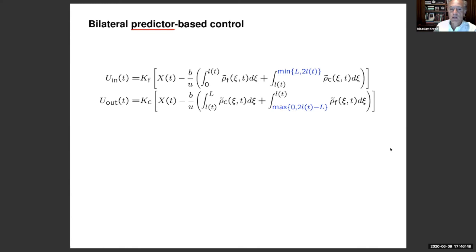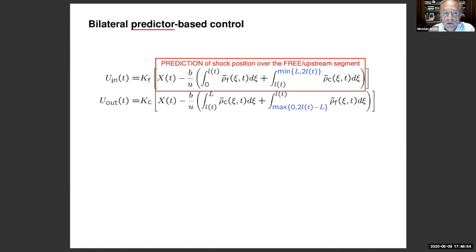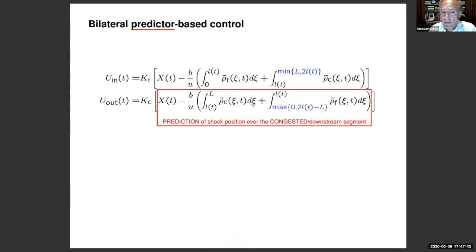And how does one approach that? Well, once the system is represented as a system with input delays, one can proceed with backstepping or one can proceed with predictor feedback, which is essentially the same for that process. And one arrives at these two feedback laws. So what are these two feedback laws? The one on the top, which controls the density at the inlet into the freeway segment, is the prediction of the shock position over the free or upstream segment. In other words, it's the prediction of where the shock will be at the time when the input signal, namely the ramp metering modulation of density, reaches the position of the shock. So that's what these added integrals do. They predict where X will be once the input gets to X, gets to capital X. And likewise, the bottom expression is the same kind of a prediction, but for the congested part.